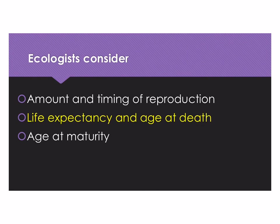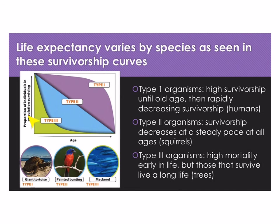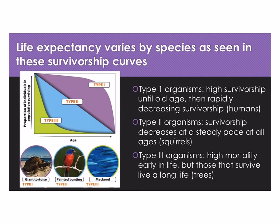The second thing to consider is life expectancy and age at death. This is a survivorship curve, and it varies by species. There are three types. Type 1 organisms, shown in purple, have high survivorship until old age and then a rapid decrease. An example is humans — we have very good survivorship until later life, and then there's a steep drop-off once people reach their 80s and 90s.